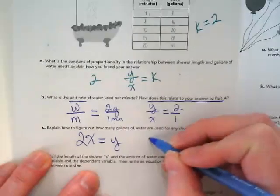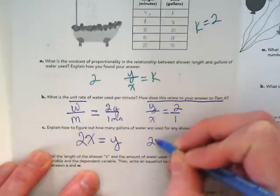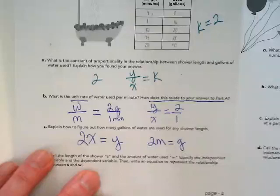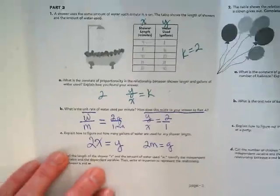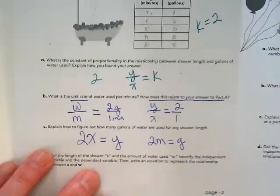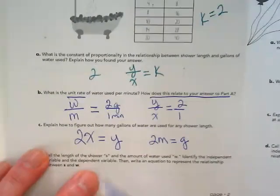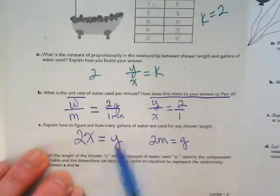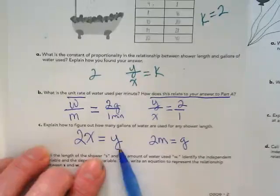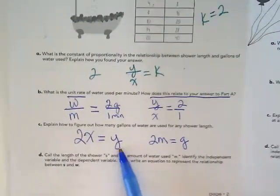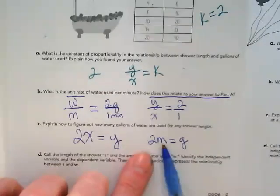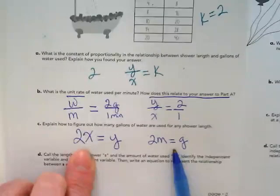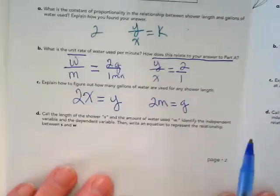The other way I could do this is I could say 2 times the minutes equals the gallons. So in our table, our minutes are our X column and our gallons are our Y column, but if I want to change the variable to just be things that kind of sound like the words in the problem, we can rewrite it as 2 times the minutes equals the number of gallons. Does that make sense how these two are related?